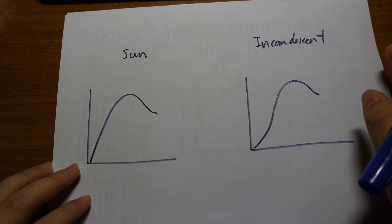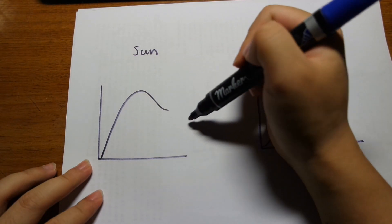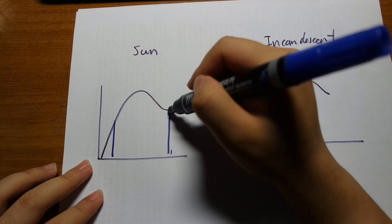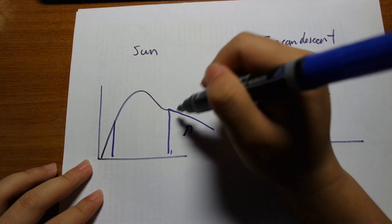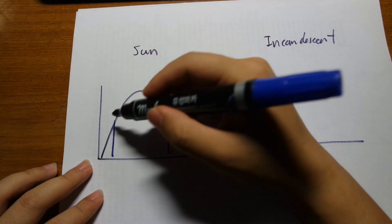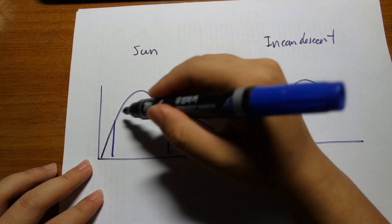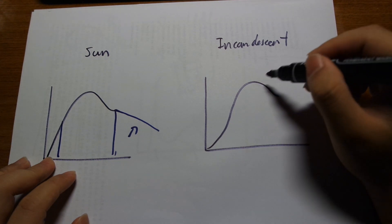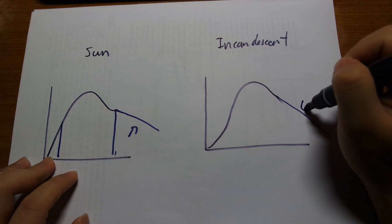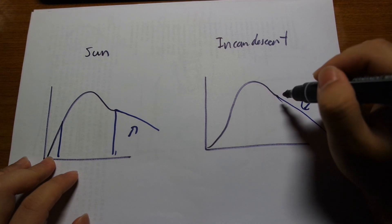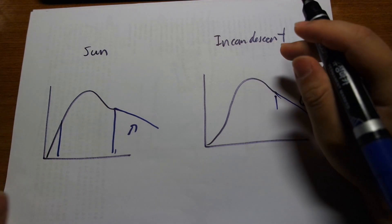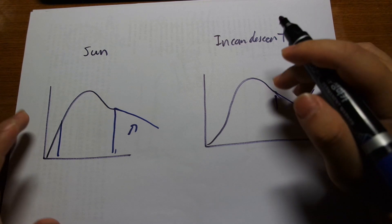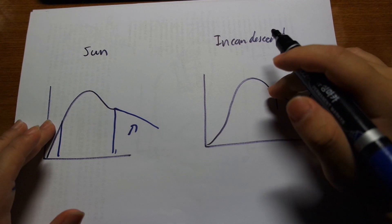Something like the sun has a continuous spectrum within the visible range, continuing into the infrared spectrum as well. Incandescent bulbs have a similar shape in terms of spectrum and also have a pretty wide range of infrared coming out. This is why you hear some people say incandescent bulbs are the most similar to the sun — they are talking about the shape of the spectrum.